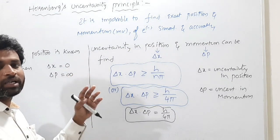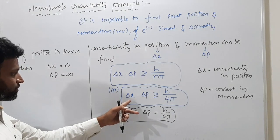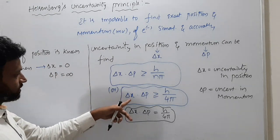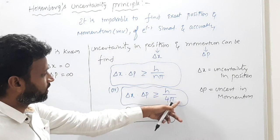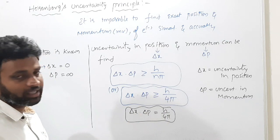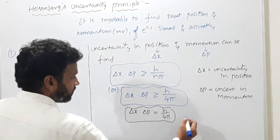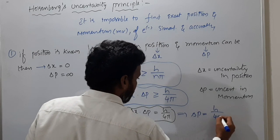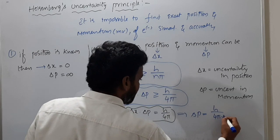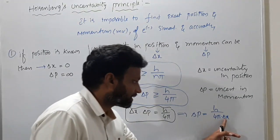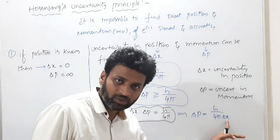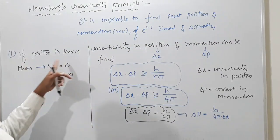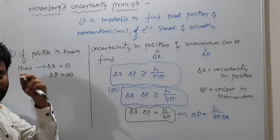If position is known, momentum cannot be known — that is why delta P becomes infinity. Substituting delta X = 0: delta P = h/(4π × 0) = 1/0 = infinity. Conversely, if momentum is known, then delta P = 0, and delta X will be infinity. Uncertainty in momentum becomes 0 and uncertainty in position becomes infinite.